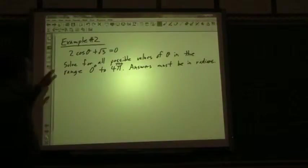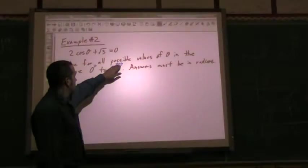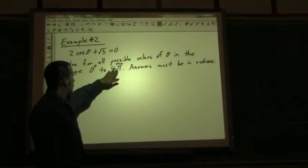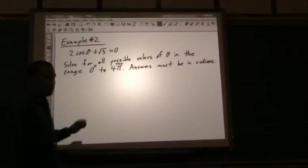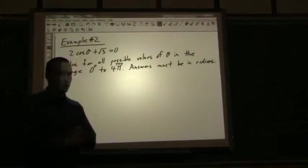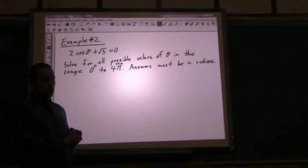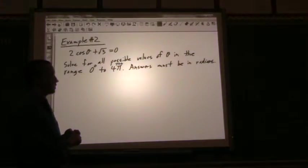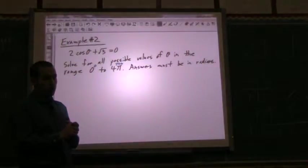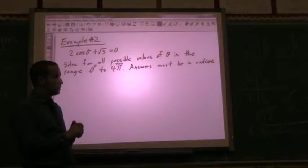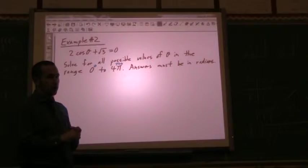So it says, solve for all possible values of theta in the range of 0 to 4π, and 0 to, of course, 4π is 720. This time, it tells me in my answers, it must be in radians. Now, again, I like to work in degrees if I can. It does not say in here that my work all the way down through has to be in radians. And so I can work in degrees on my way down through with changing to radians. And again, that's a preference of mine. If you are fine working with radians, then that's great, work in radians all the way through. But most people are just more comfortable in degrees.